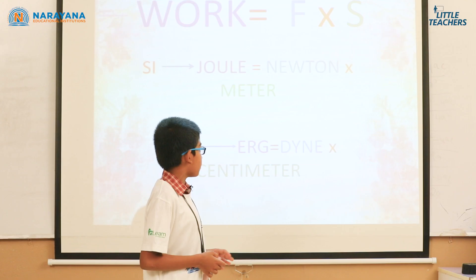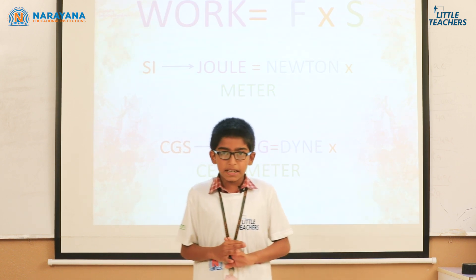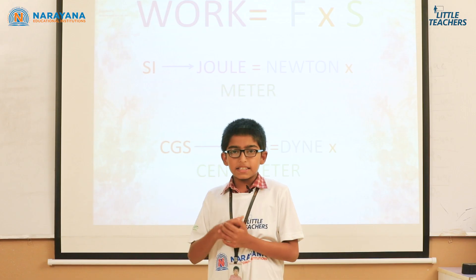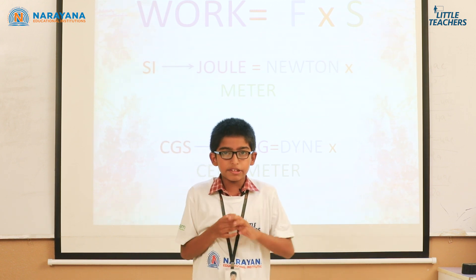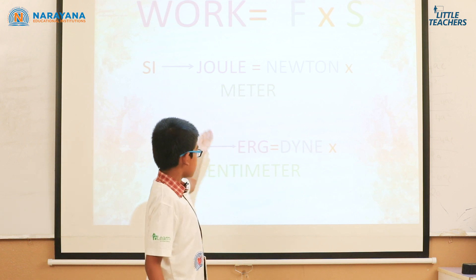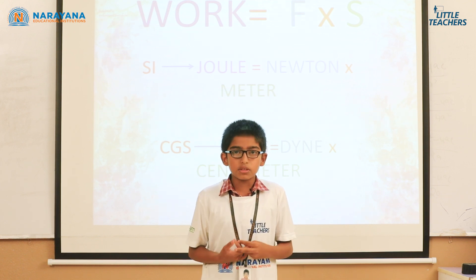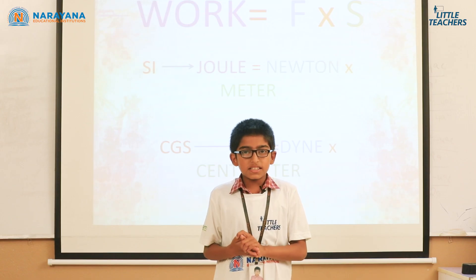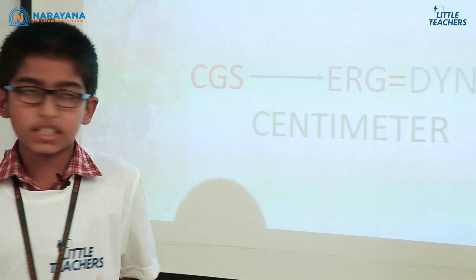Now let us find out the units and dimensions of work. To get the SI and CGS units of work, take the formula: force multiplied by displacement. We take the SI unit of both force and displacement. The SI unit of force is Newton and the SI unit of displacement is meter. Newton multiplied by meter equals Joule. So the SI unit of work is Joule. For the CGS unit: the CGS unit of force is dyne and the CGS unit of displacement is centimeter. Dyne multiplied by centimeter equals erg. So the CGS unit of work is erg.